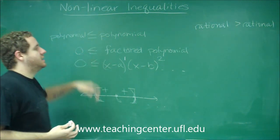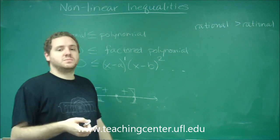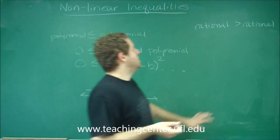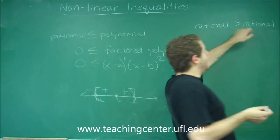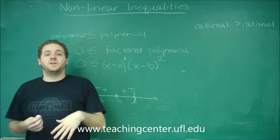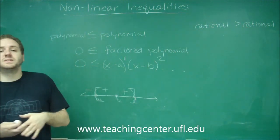Well, in that case, you still want to get one side equal to zero, so you'd have to subtract over. The problem here is that since these might have denominators with different things, you have to get a common denominator to put them together.